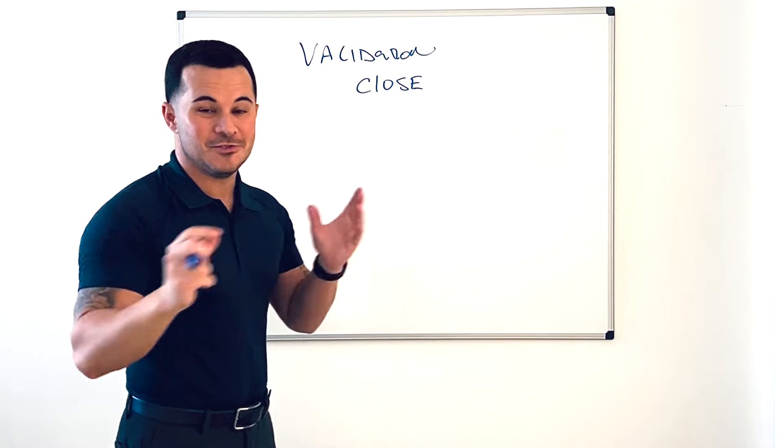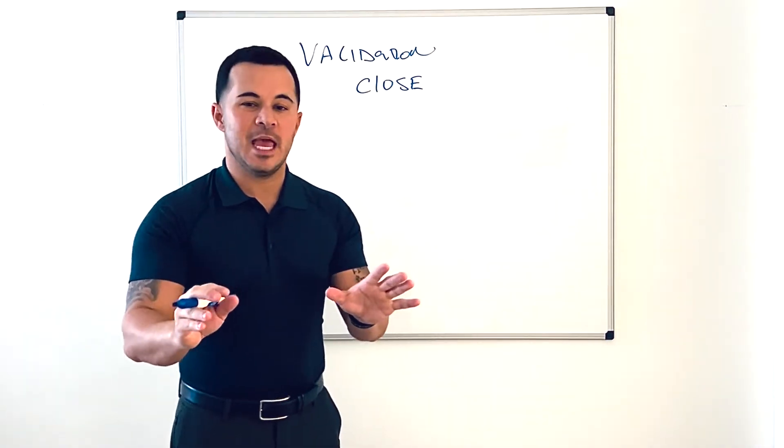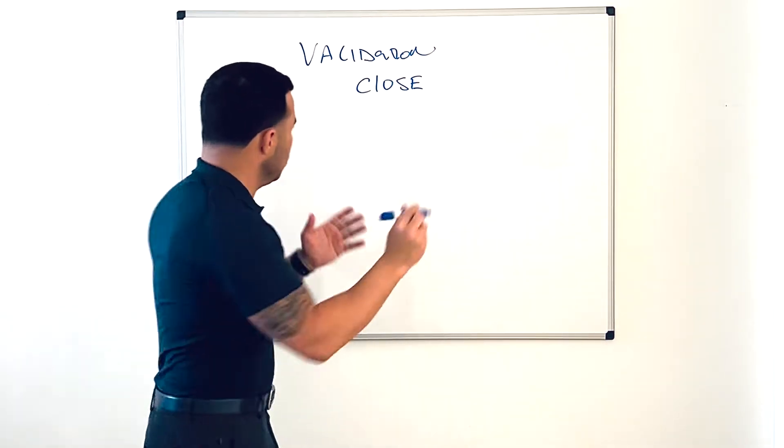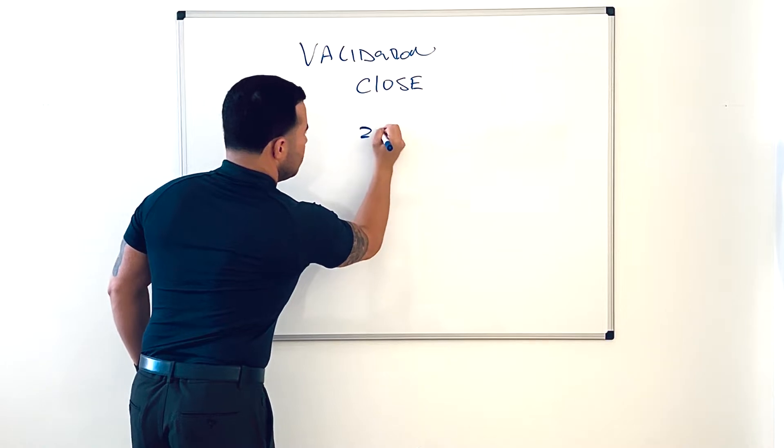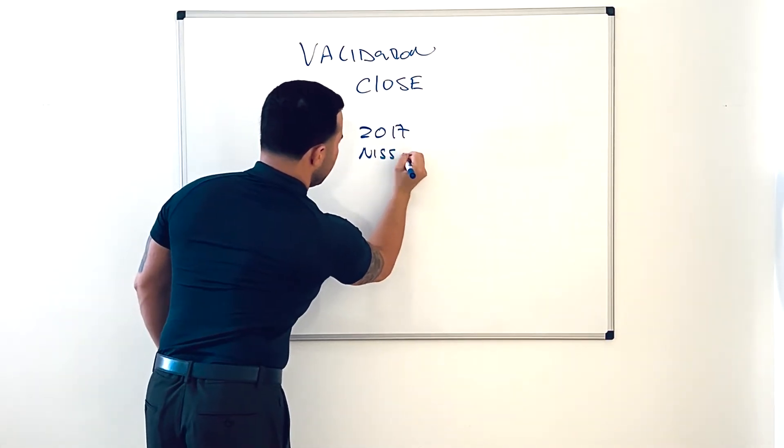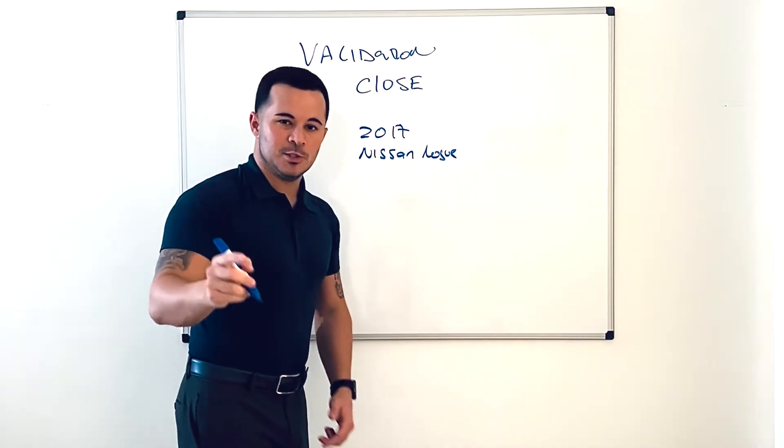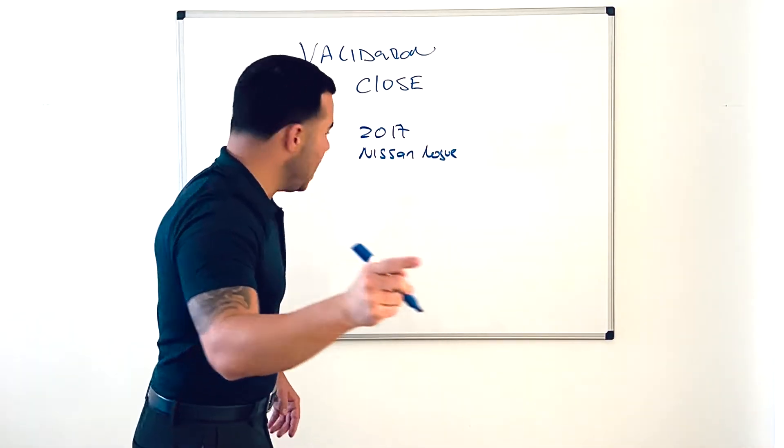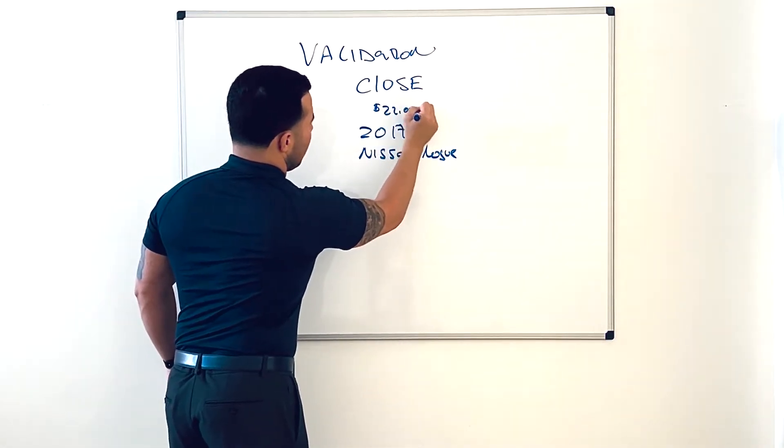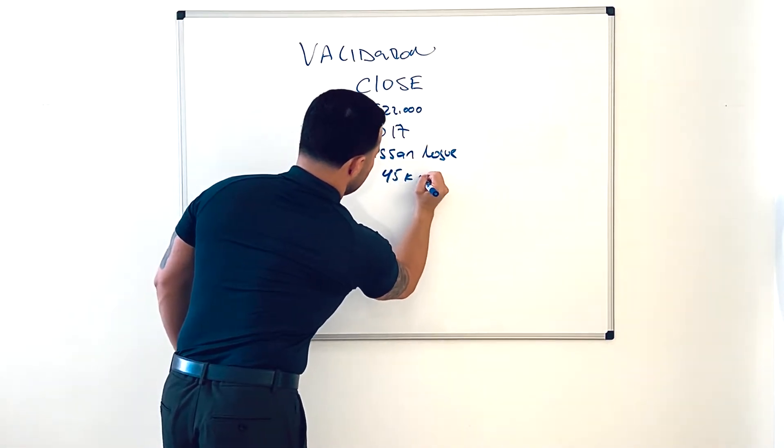So I'm kind of excited about that. Validation close. I'm going to set the table for you. Let's say we have a customer who says hypothetically you're looking at a 2017 Nissan Rogue. That's the vehicle your customer wants to drive home today. And let's say the sale price on that vehicle is $22,000 and there's 45,000 miles on the vehicle.